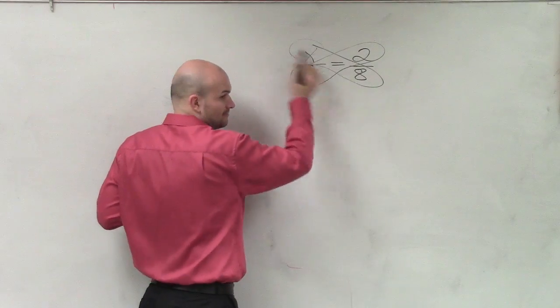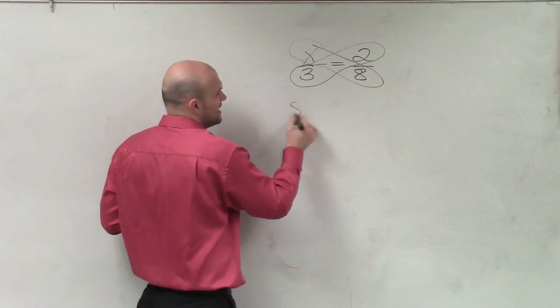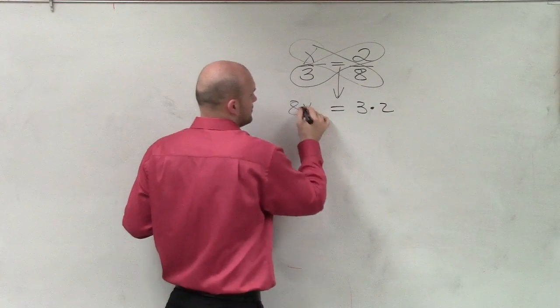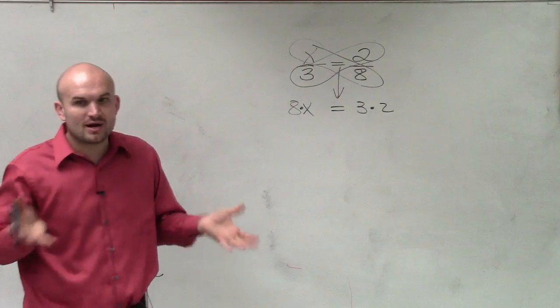So you could say x times 8, which we like to write as 8x, equals 3 times 2. So the cross-products are equal to each other.